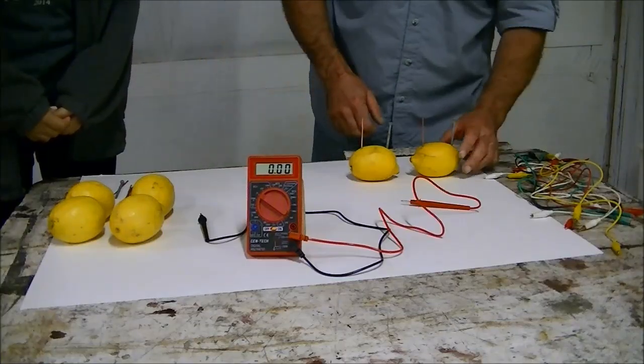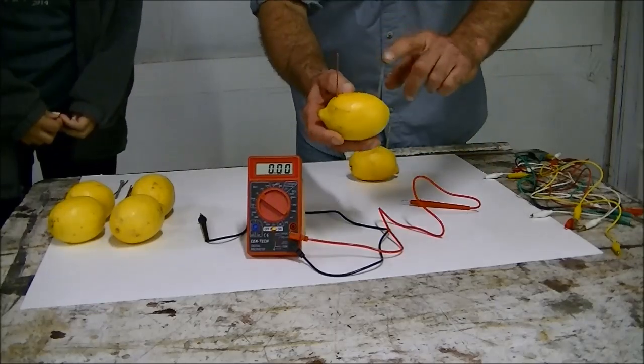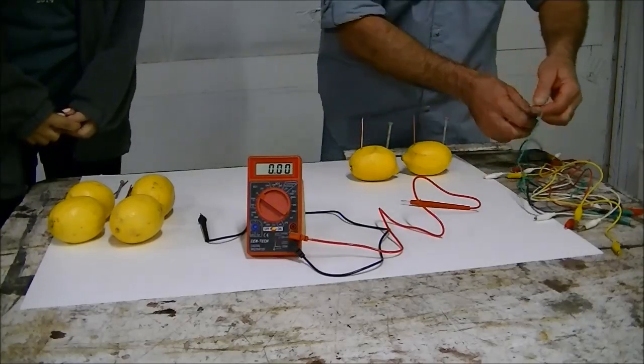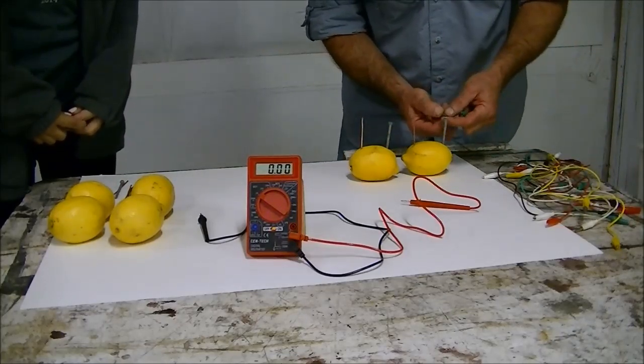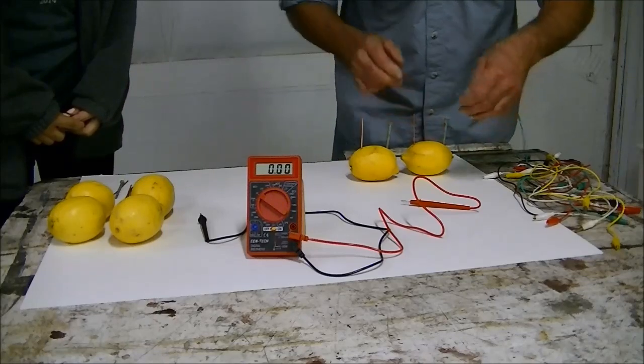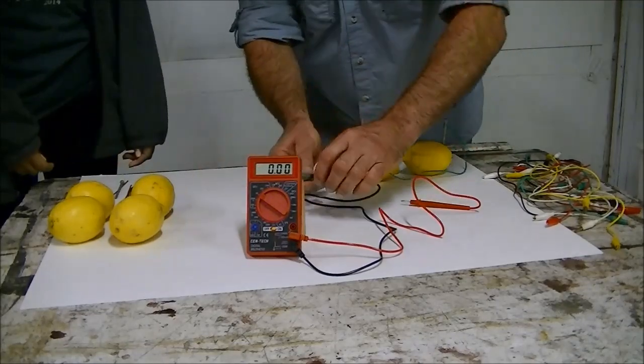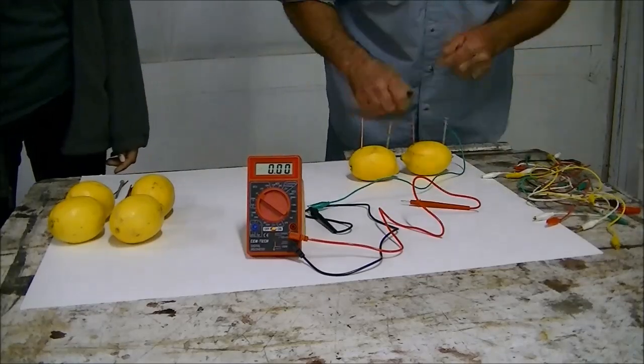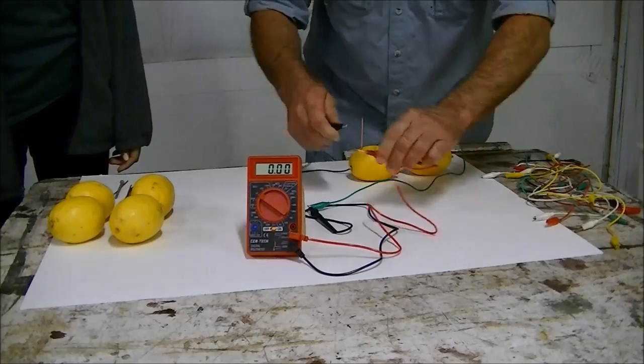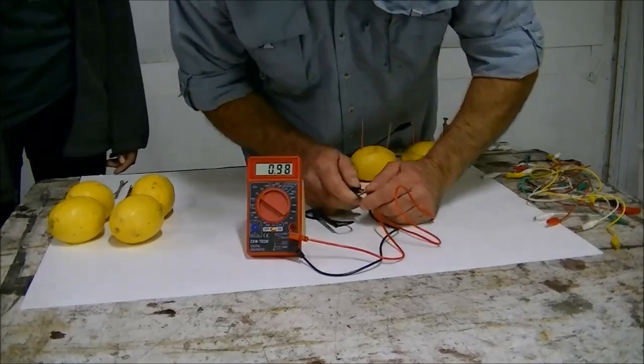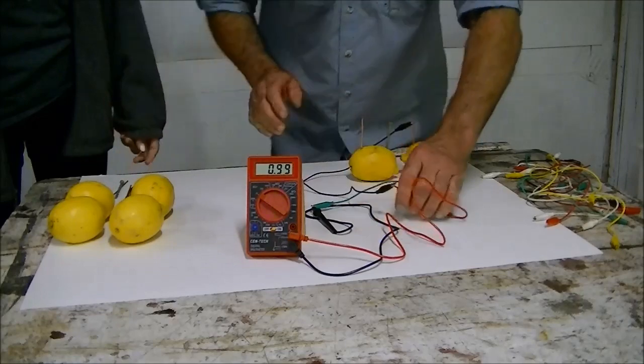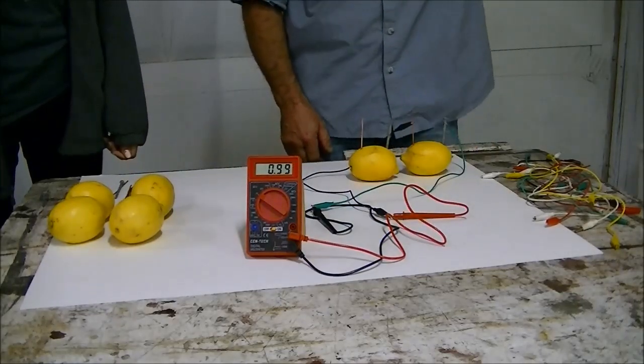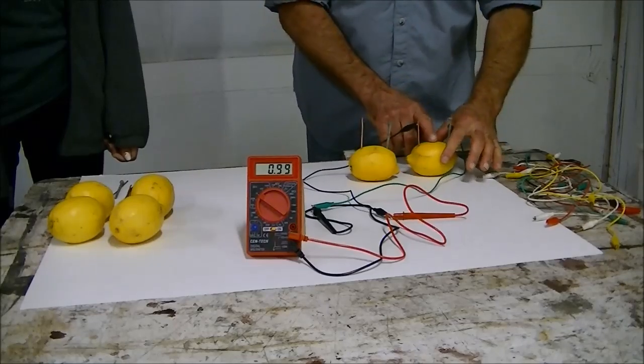Alright, so what I did is I took a lemon and I put a galvanized nail in one side and a piece of copper wire on the other. I'll hook my jumper wires on and if I did this right we should be getting almost a volt, about 0.98 of a volt. So that's like one battery.